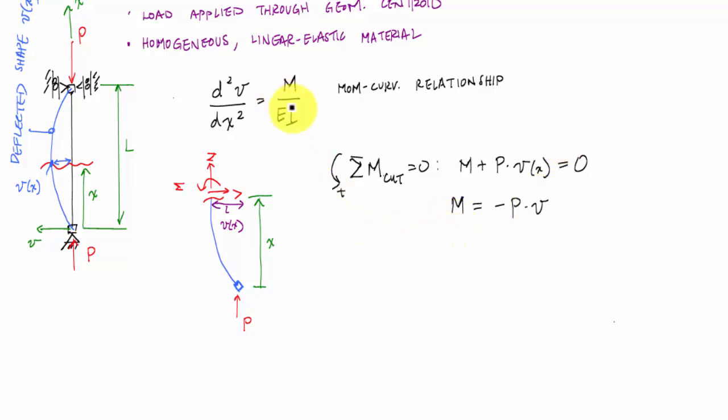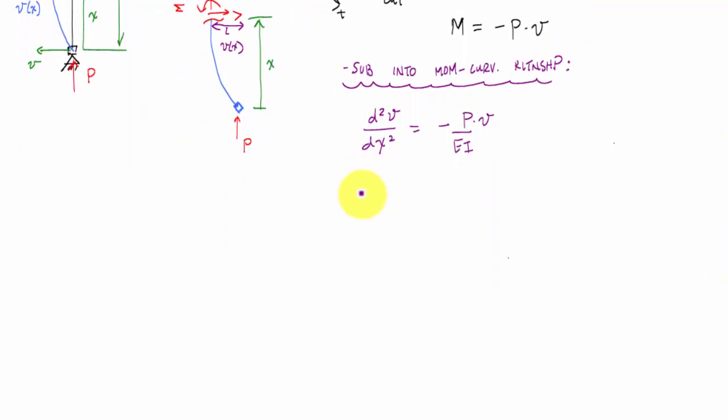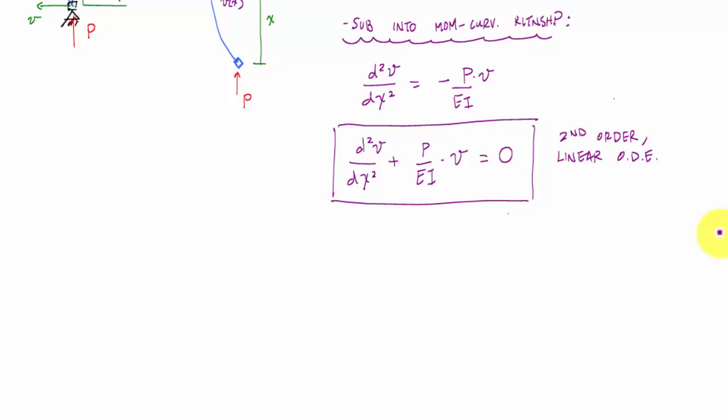And if I take this and I substitute it into the moment curvature relationship, I get that this D squared V over DX squared is equal to negative P times V over EI. And then if I rearrange this, I get D squared V over DX squared plus P over EI times V equals zero. And oh snap, I have a second order linear ordinary differential equation. And it's equal to zero. So it's homogeneous too. And now we need to solve the second order ODE. You might need a refresher on how to solve it. You can click right here and get to watch a video on a quick recap on how to solve a second order linear ODE.